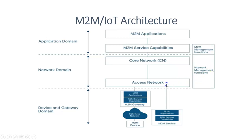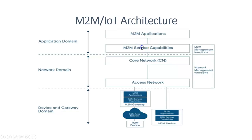In summary, the overall M2M architecture consists of three domains: the device and gateway domain, the network domain, and the application domain. The device and gateway domain is responsible for collecting and sending data. The network domain transmits the data using access and core networks. The application domain processes the data, generates insights, and enables automation. Thank you for watching.